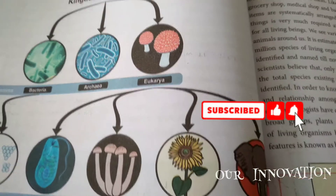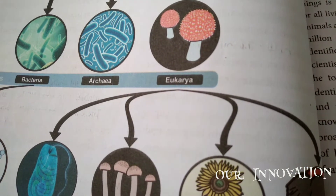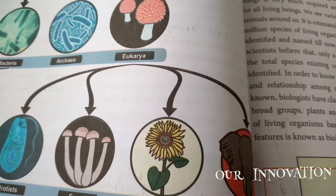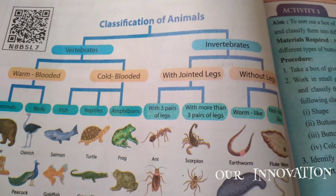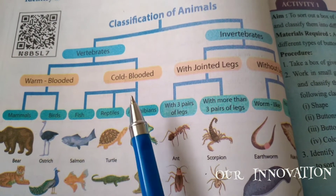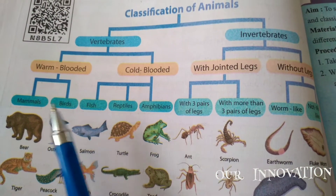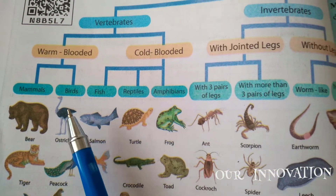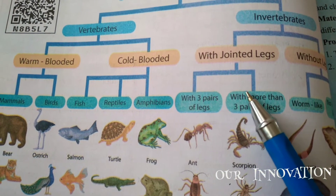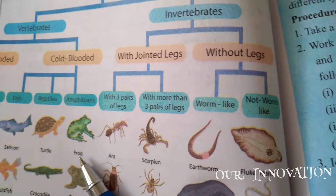So this lesson is called Book Evaluation, Kingdoms of Organisms. Here the classification of animals is given - vertebrates and invertebrates. Vertebrates are classified into warm-blooded and cold-blooded. Invertebrates are classified as with joint legs and without legs. Warm-blooded includes mammals and birds; cold-blooded includes fish, reptiles, and amphibians. Invertebrates with joint legs are classified by three pairs of legs or more than three pairs of legs, and worm-like and non-worm-like.